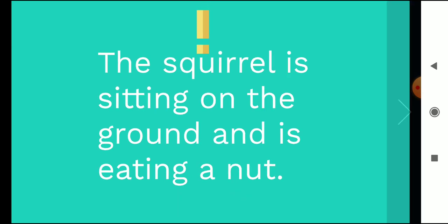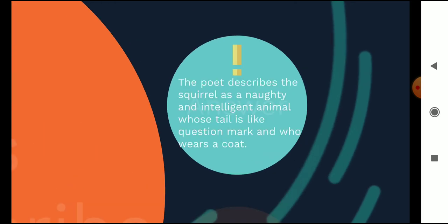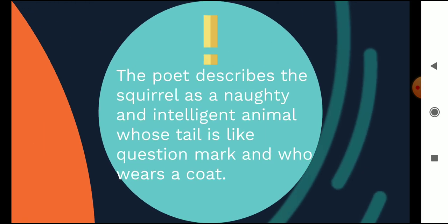Let's move on to the second question. How does the poet describe the squirrel? You tell me. The word describe means how does the poet tell you about the squirrel? What words does he use? Yes, the poet describes the squirrel as a naughty and intelligent animal whose tail is like a question mark and who wears a grey coloured fur coat.